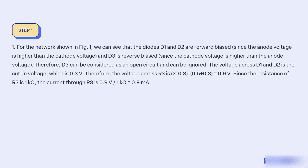Therefore, the voltage across R3 is 2 minus 0.3 minus 0.5 plus 0.3, equal to 0.9V. Since the resistance of R3 is 1kΩ, the current through R3 is 0.9V / 1kΩ equal to 0.9mA.